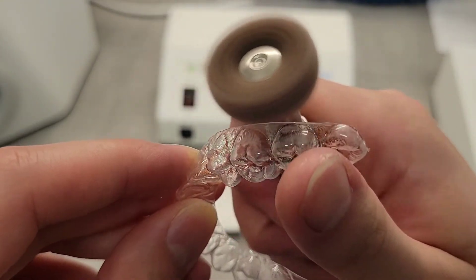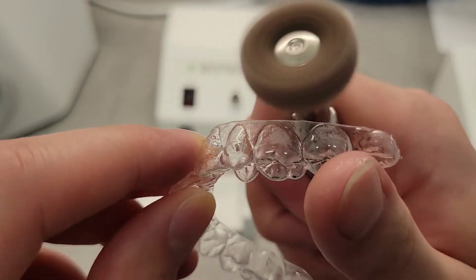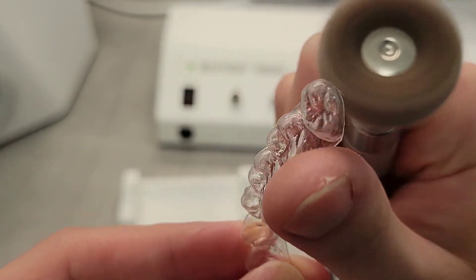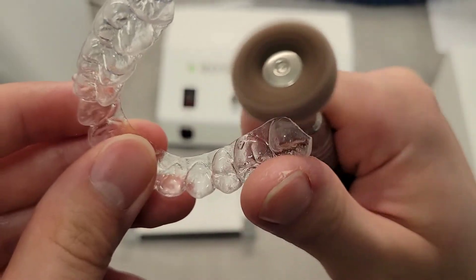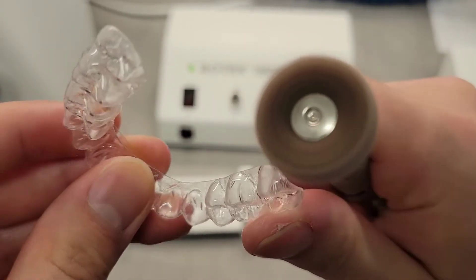You don't want to push the polishing bur too hard on the aligner, and you want to keep the speed on RPM that cuts the aligner smoothly. Too slow won't create a smooth edge, and too fast takes too much plastic off.